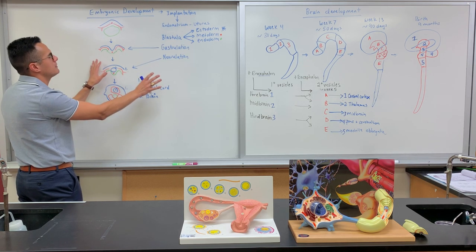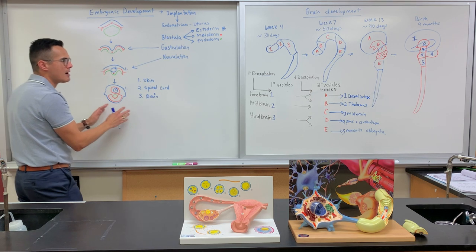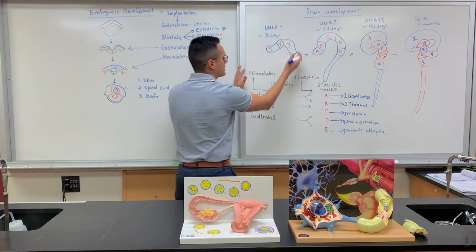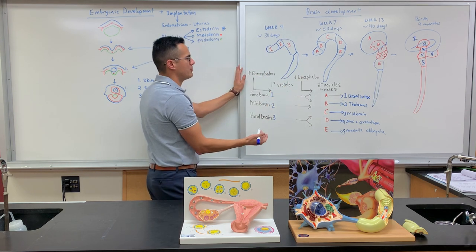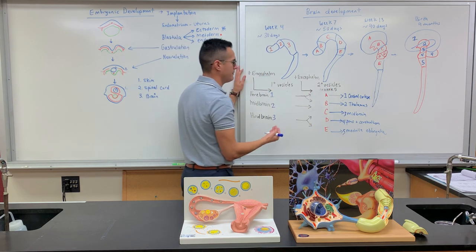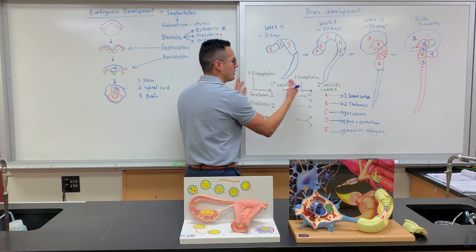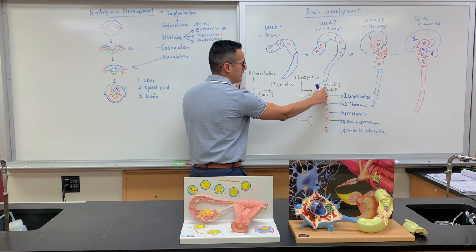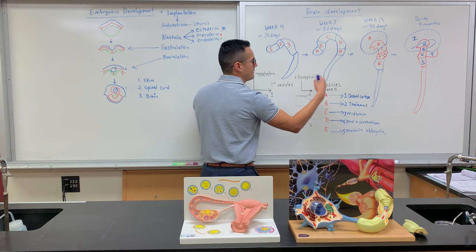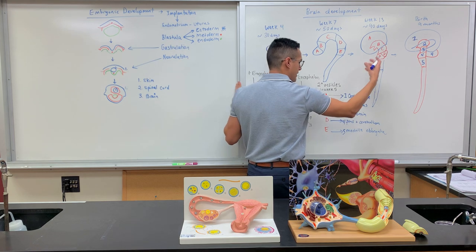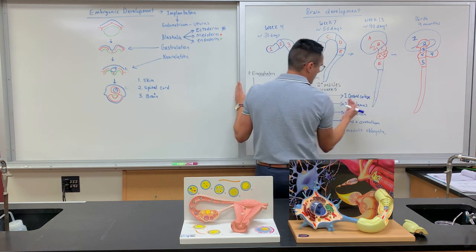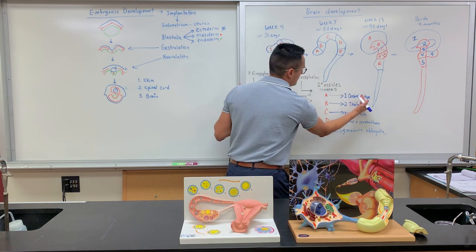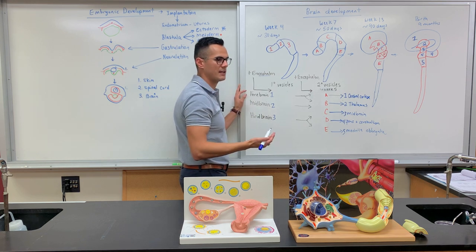For embryonic development, once we get to about week four — around 30 days — we get this structure here. You have primary and secondary vesicles. We're going over this to see where the secondary vesicles come from, because the secondary vesicles are what then start to develop into the regions of the brain, growing until we finally get to the fully developed brain. We have to have our primary vesicles to get to this point.